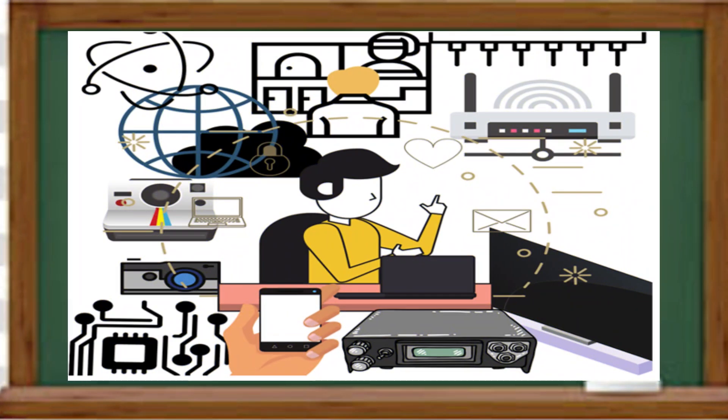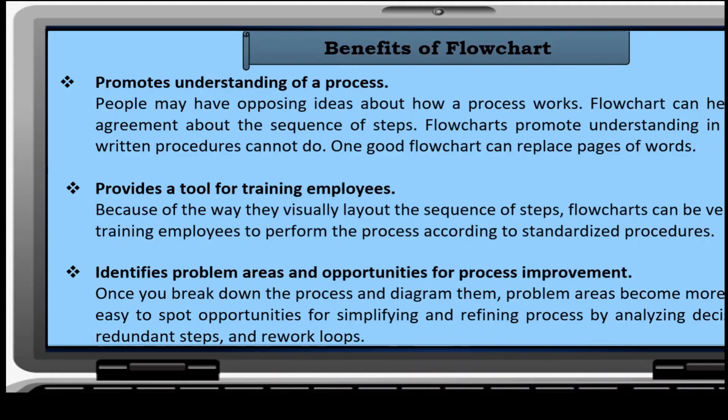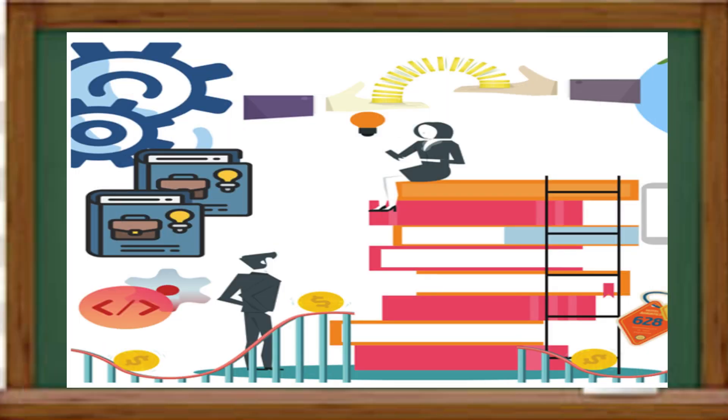Because of the way they visually lay out the sequence of steps, flowcharts can be helpful in training employees to perform the process according to standardized procedures. And to identify problem areas and opportunities for process improvement. Once you break down the process and diagram them, problem areas become more visible. It is easy to spot opportunities for simplifying and refining process by analyzing decision points, redundant steps, and rework loops.